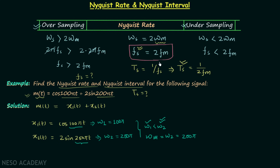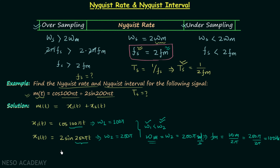Now we can calculate fm directly, since fm = ωm / (2π). With ωm = 200π, we get fm = 200π / (2π) = 100 Hz. The Nyquist rate Fs is then Fs = 2·fm = 2 × 100 = 200 Hz. So the Nyquist rate is 200 Hz.